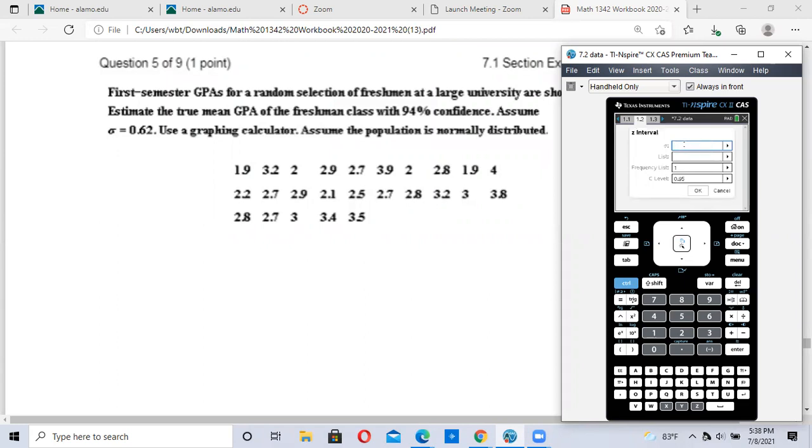It asks what is our population standard deviation. The problem lists it here as 0.62. I enter 0.62 on my calculator. The list - my list was in L1. You have to label that column so your calculator knows where to get that information. Frequency list is going to stay at one, and we're doing a 94% confidence interval here. When we hit OK, we're done.